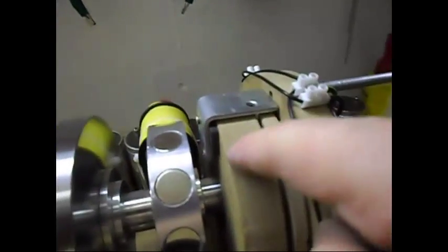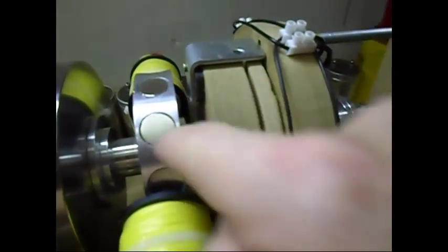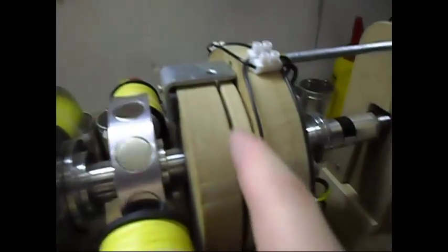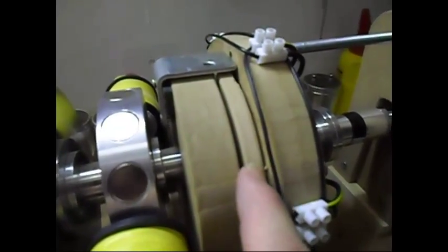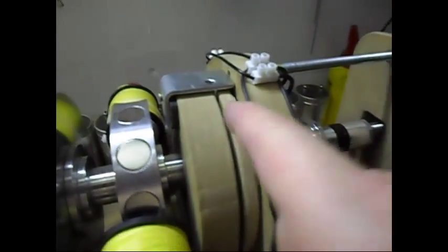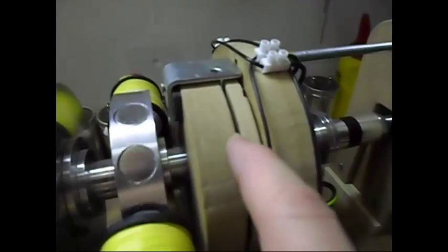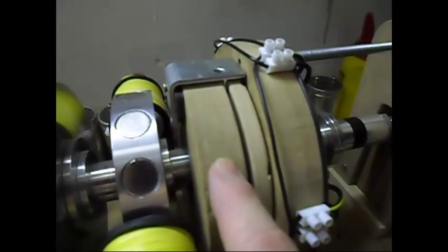This is the stator which houses 12 neodymium magnets, which are the same as these ones here. This rotor is my eight pole rotor with the half sphere iron disc. I've used the four pole and I've also used the 12 pole. Man, those two gave me massive cogging, so much that the system won't even run.